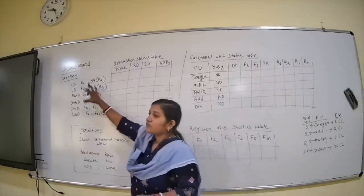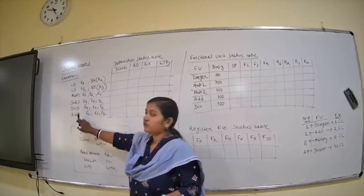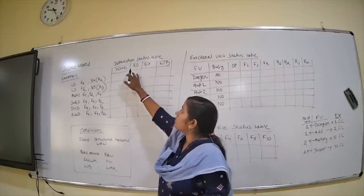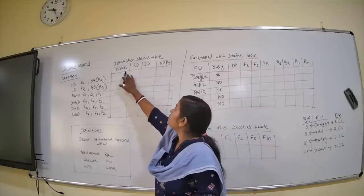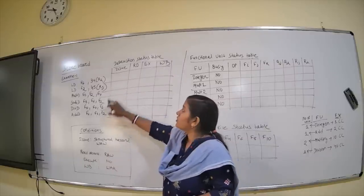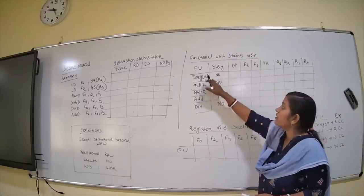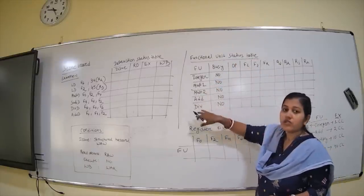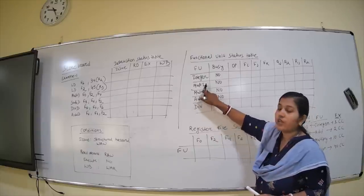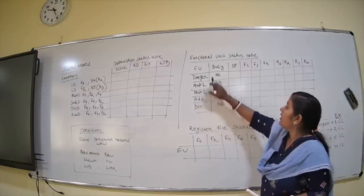The instructions are: two load instructions, then multiply, then subtract, then division, then add. The instruction status table has four stages: issue, read operand, execute, and write back. Each instruction passes through these stages. The functional units status table covers: integer, multiply one, multiply two, add, and division.